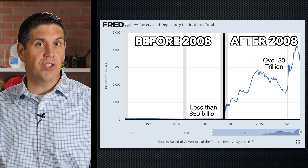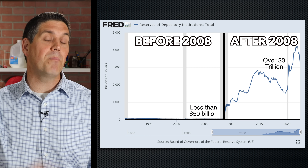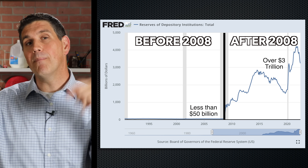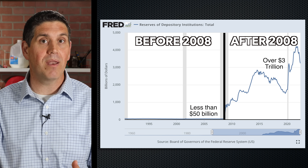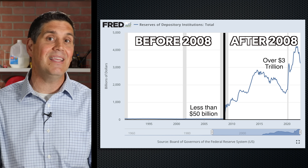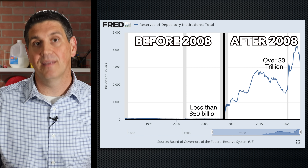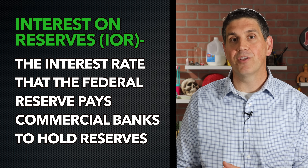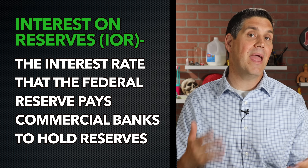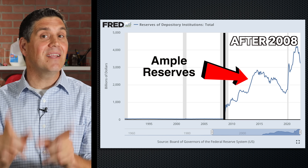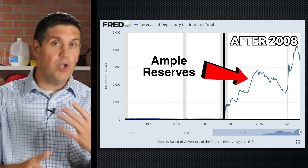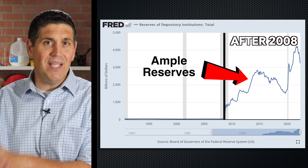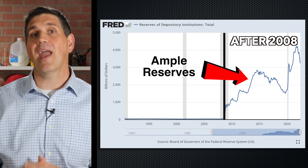But after 2008, commercial banks held a ton of reserves with the central bank. In addition to stricter regulations, one of the reasons is because the Fed started paying interest on those reserves. So now commercial banks can deposit their extra money with the Federal Reserve and earn an easy, safe rate — let's say 2%. That rate is called the interest on reserves balance rate, the amount that the Fed pays commercial banks. This is a banking system with ample reserves, and it's the new stuff that's probably not in your textbook, but you need to know it for your exam and it's definitely on the AP test.